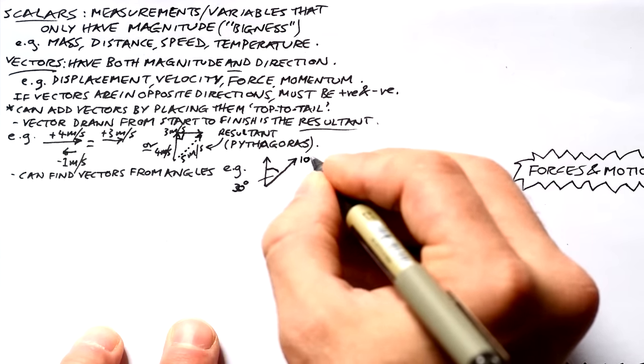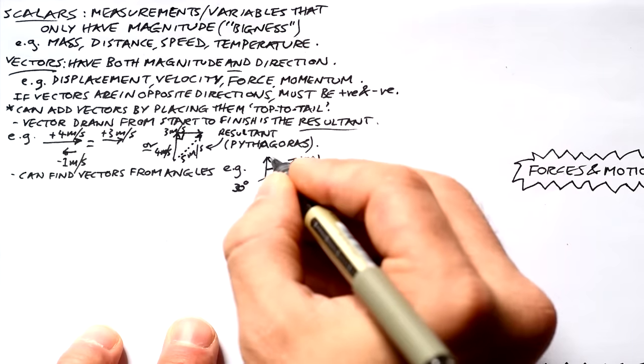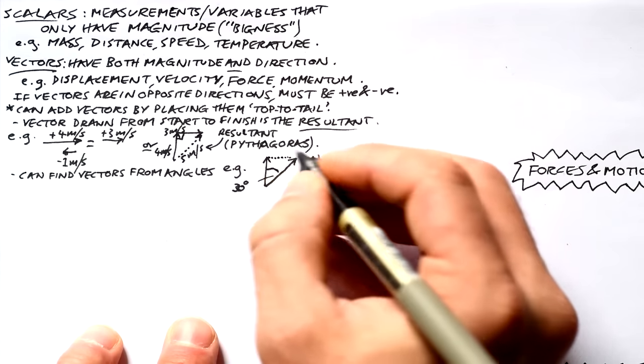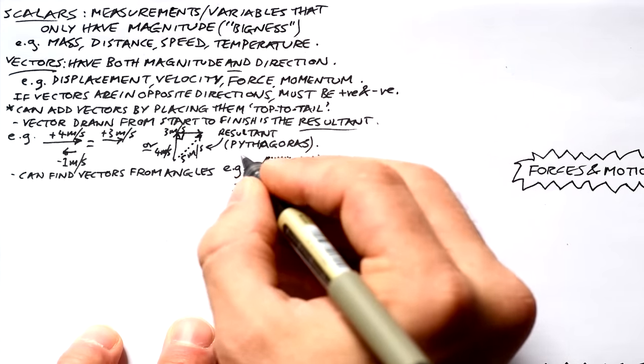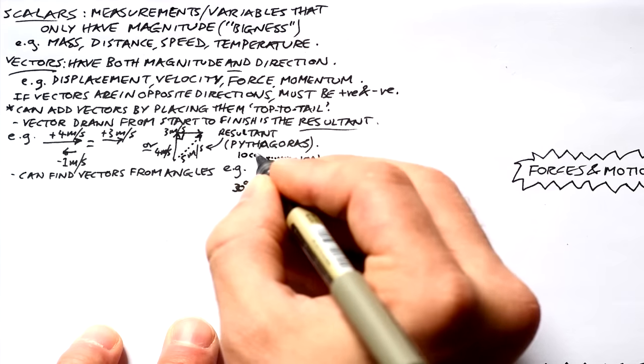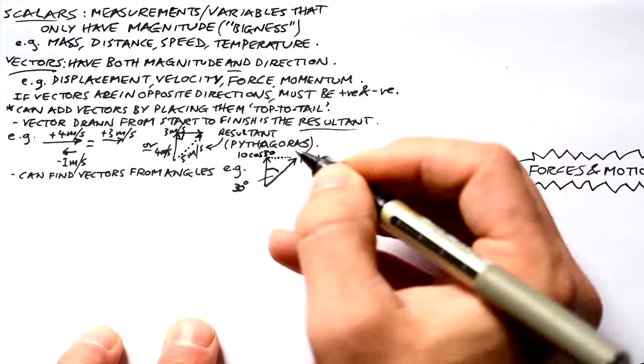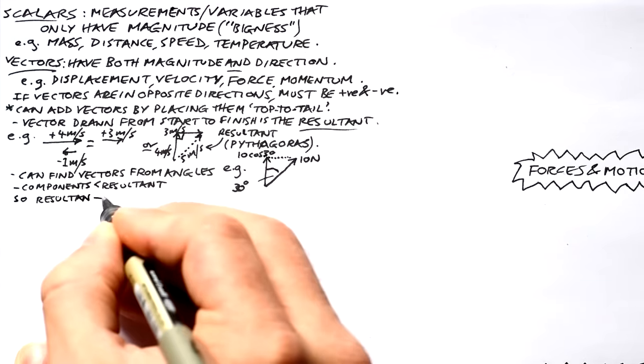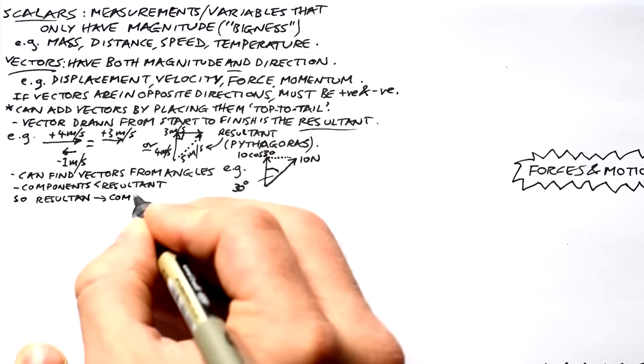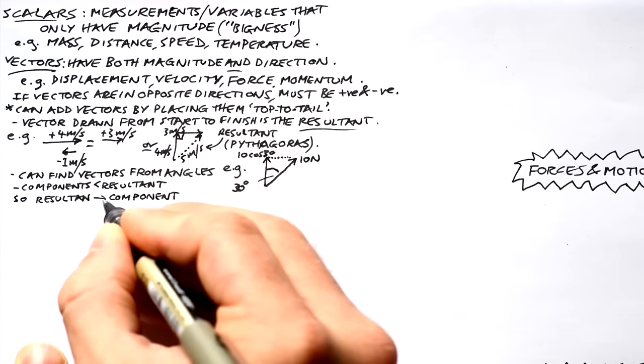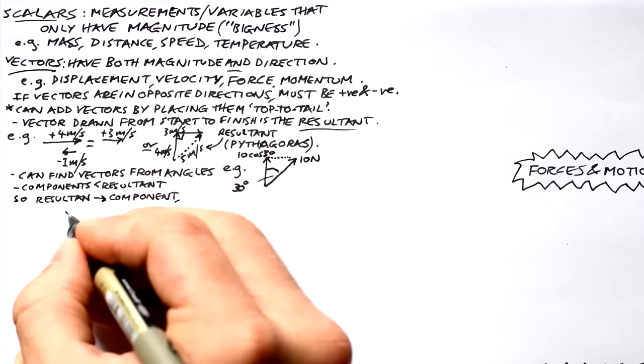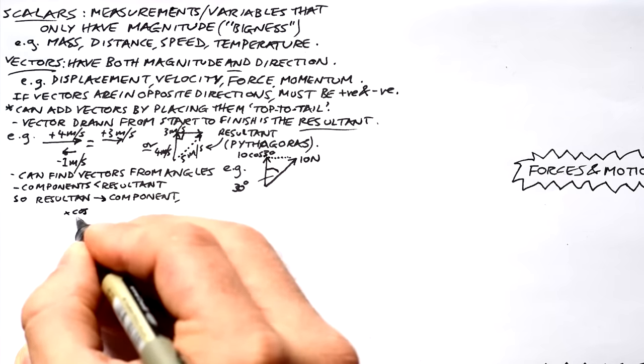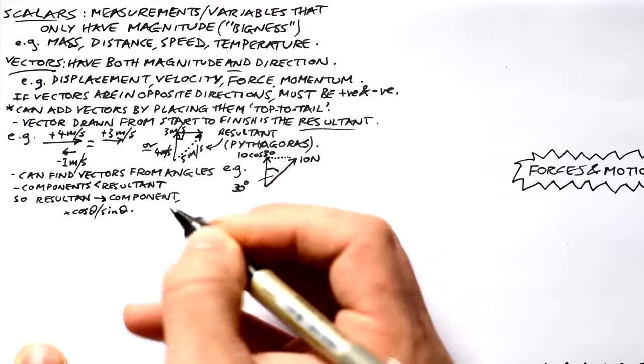We can find vectors from angles, that's trigonometry. This is usually only for triple people. If you've got a vector like this 10 newtons but you want to find a component of it, that means how much of it is going vertical or horizontal, then we can use trig or if you know my quick vectors trick then we can just times by cos of the angle or sine of the angle depending on which one we're trying to find. Components are always smaller than resultants so we're always going to times by cos or sine of the angle.